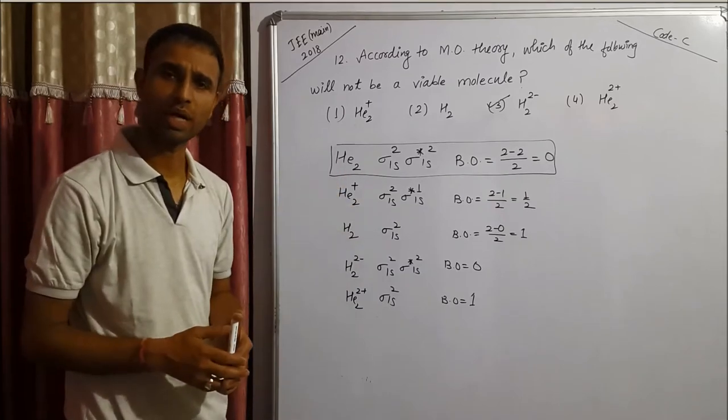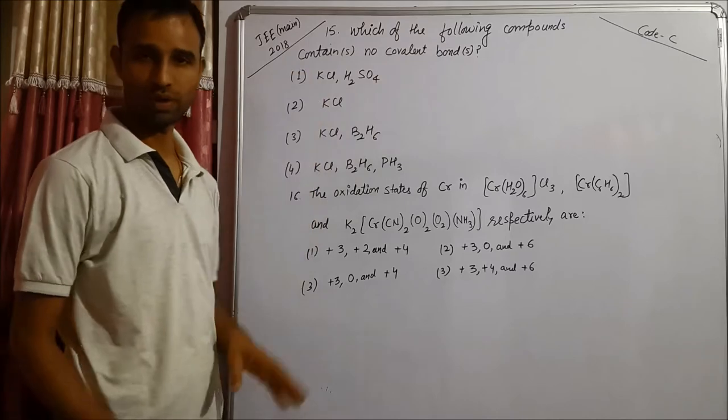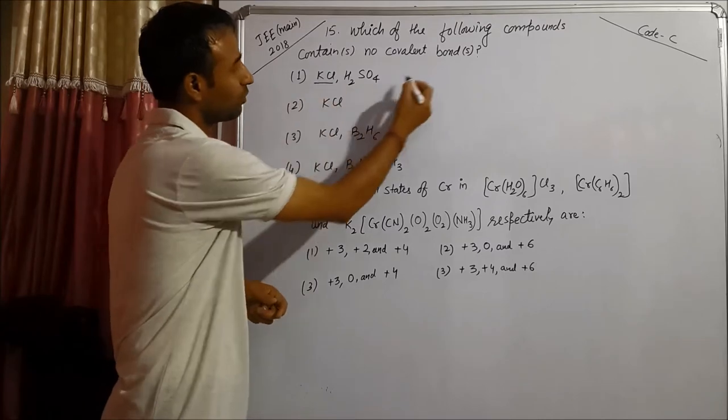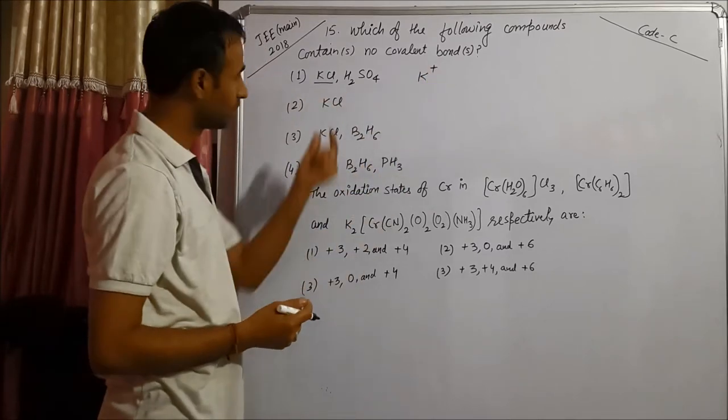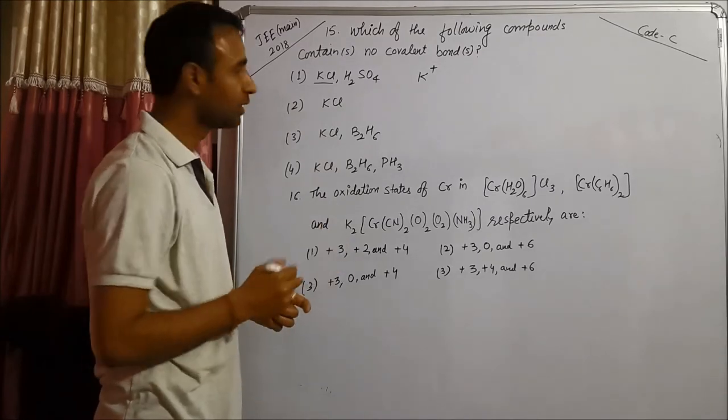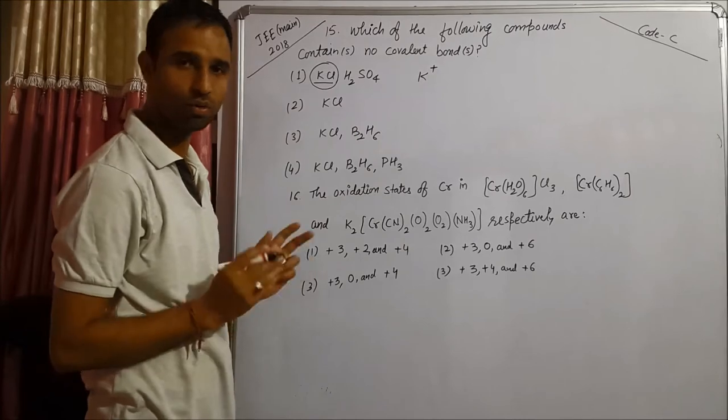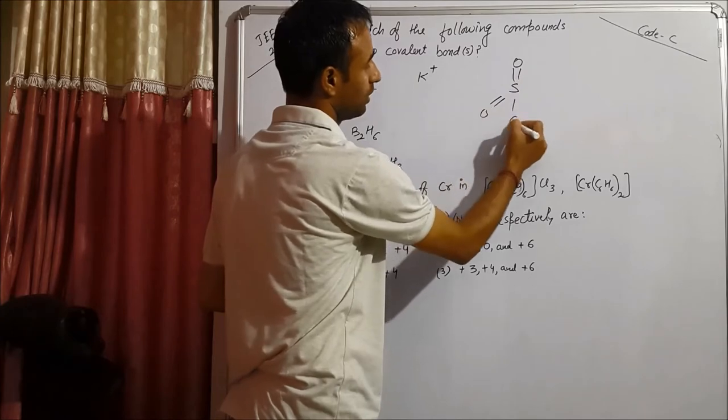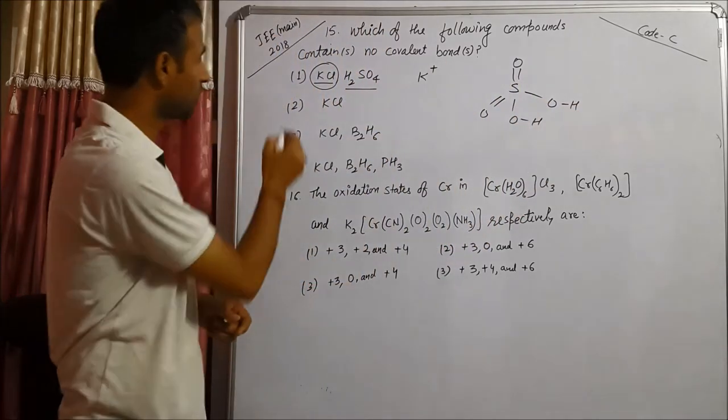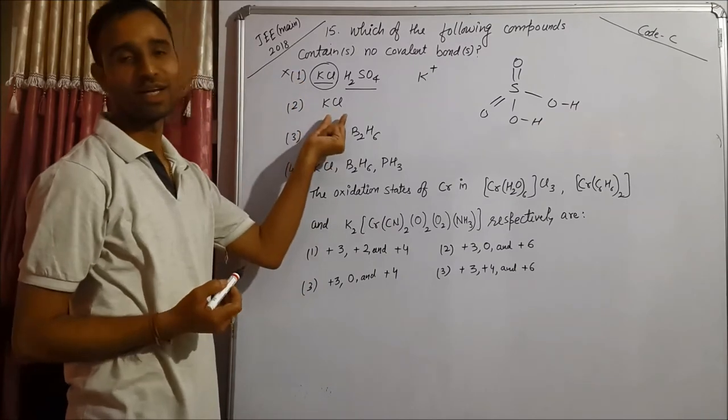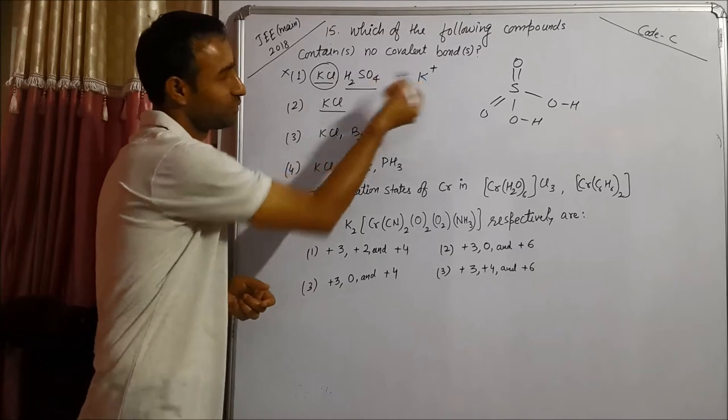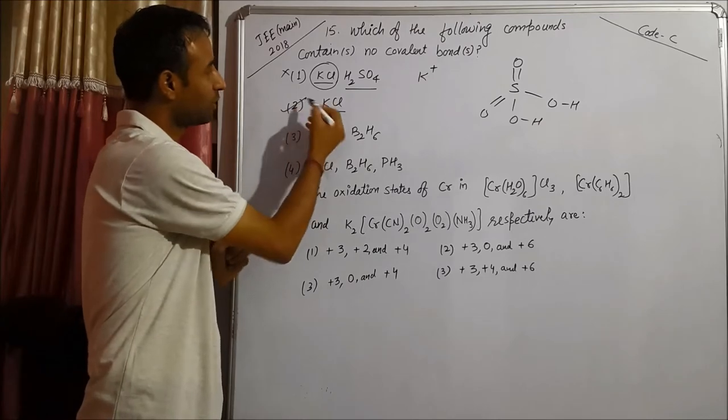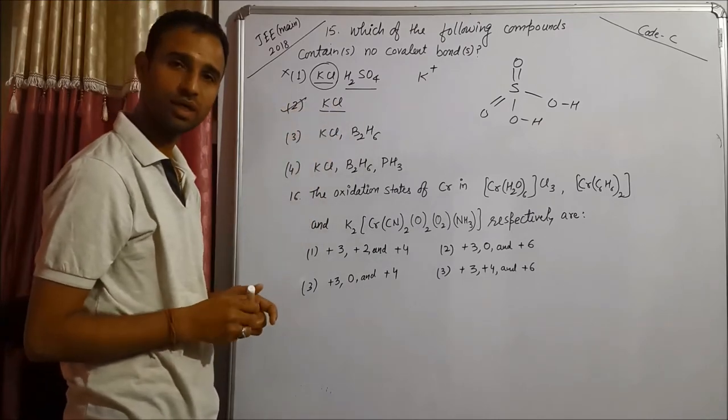Very easy question from chemical bonding: which of the following compounds contains no covalent bond? KCl - alkali metal always forms ionic bond except lithium. So KCl has ionic bond, no covalent bond. But in H2SO4, it has all covalent bonds, so this is not the right option. KCl has no covalent bond, so the second option is the right option.